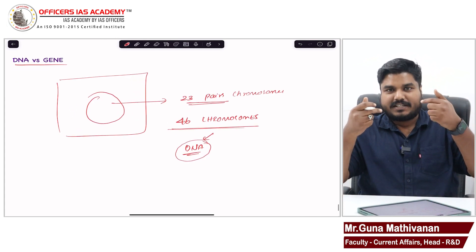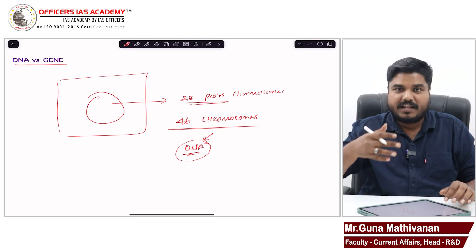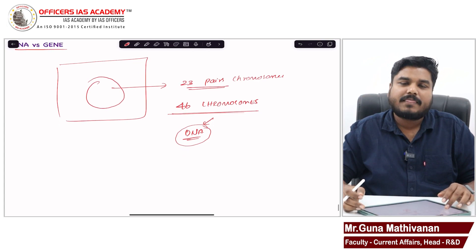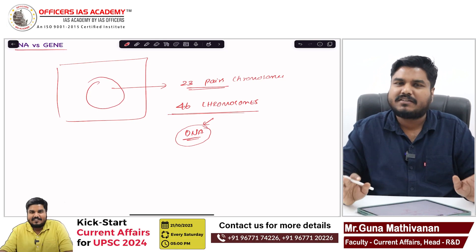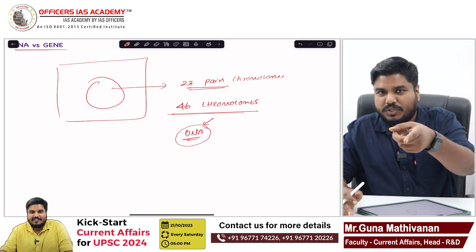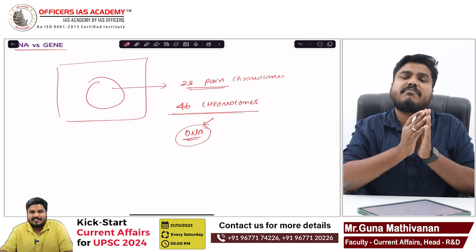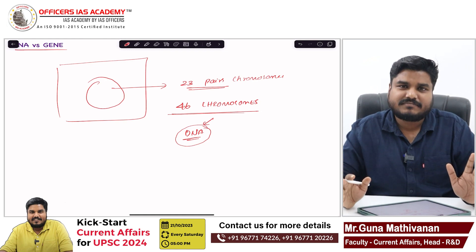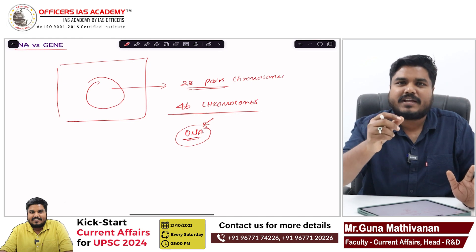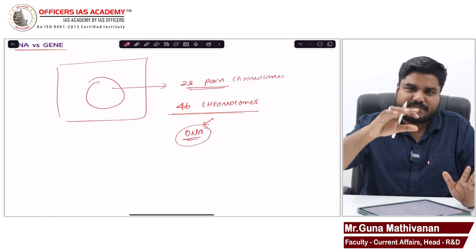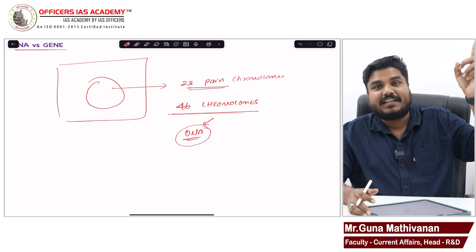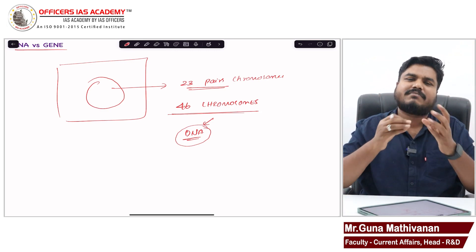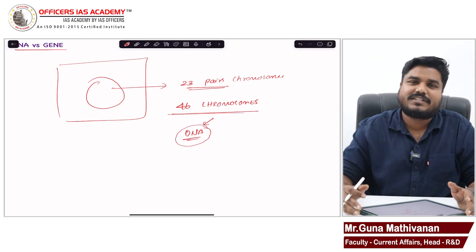If you want to understand humans, read the DNA of humans. Everyone's DNA will be similar - my DNA and your DNA will be 99.99% similar. Only 0.009% makes all the difference. You take Bill Gates' DNA and compare with Guna's DNA - 99.9% similar.